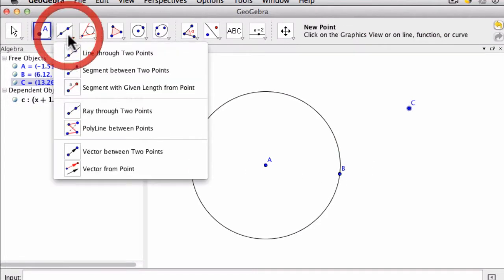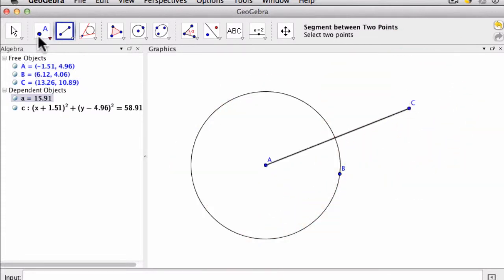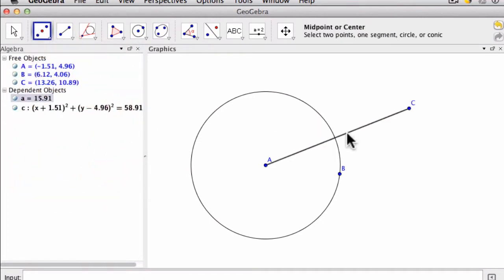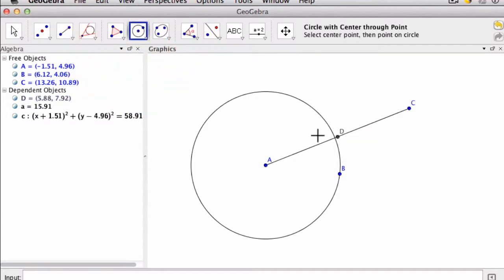Now what I'm going to do is I'm going to create a line segment between points A and C, like this, and then I'm going to find the midpoint of that line. So I click the line right there. Now I have this center D right here. That'll be the center of my new circle. So I create a circle off of the midpoint of D that passes through C and A.